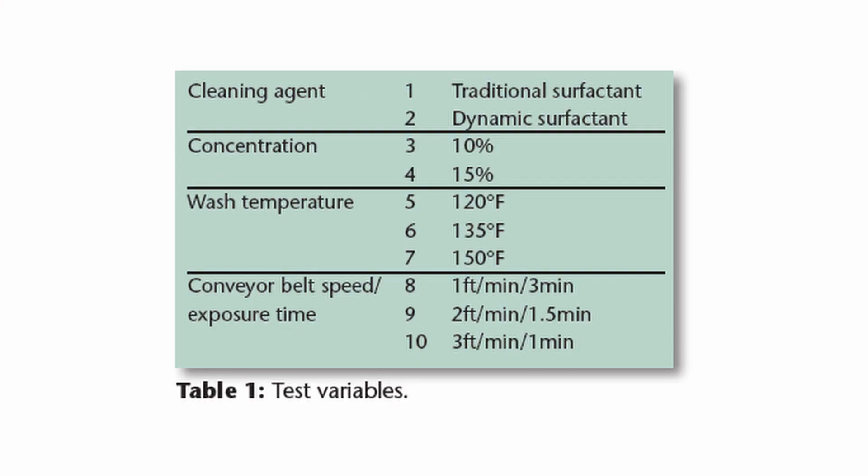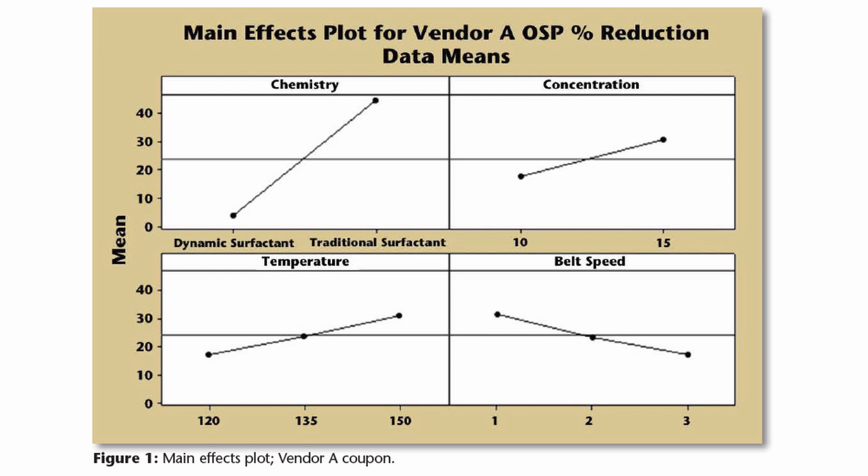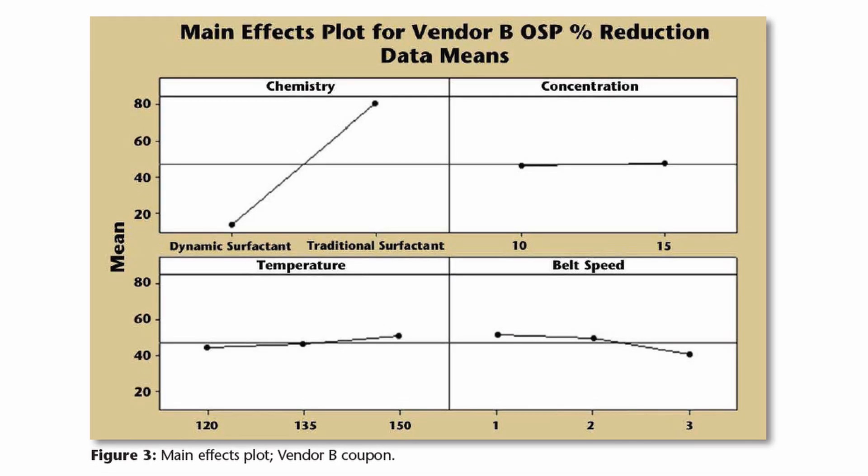The concentration of the cleaning agent, the temperature of the cleaning agent, as well as the exposure time were varied. It was found during the study that the OSP layer was removed more at the higher process settings — higher concentration, higher temperature, and larger exposure time. However, when comparing the two chemistries, it was found that with the uninhibited alkaline chemistry, the OSP layer was removed a lot more, up to 50%, whereas with the inhibited alkaline chemistry, it was removed only up to 5%. Therefore, for OSP compatibility, using the right cleaning agent becomes very important.